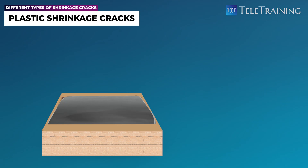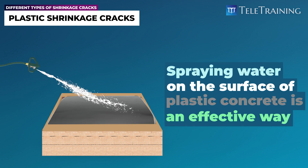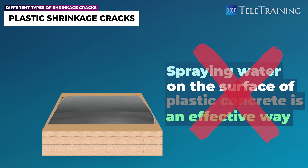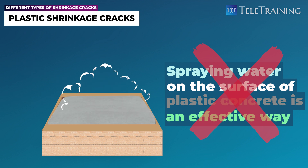There is a common misconception that spraying water on the surface of plastic concrete is an effective way to control plastic shrinkage cracks. However, this is only a short-term solution, as the water will quickly evaporate, allowing the cracks to develop.